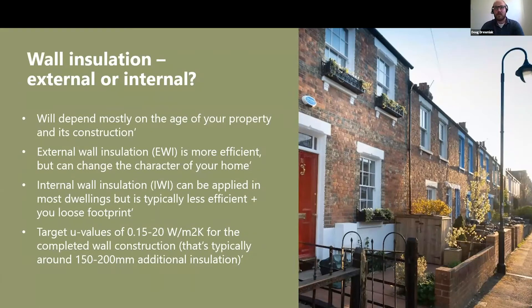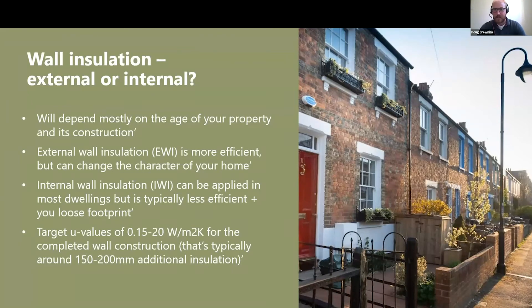Internal wall insulation is suitable for most homes. It is typically applied in thinner layers — whereas external insulation can be as thick as 200 millimetres, with internal insulation you're probably in most cases below 100 millimetres, and you finish up with a plaster. That can help to improve the U-values. Target U-values — something to discuss with your retrofit coordinator, builder, or architect — should typically be between 0.15 and 0.2 for external walls.